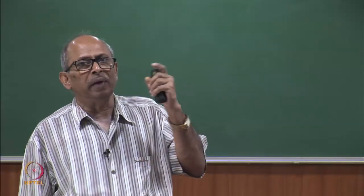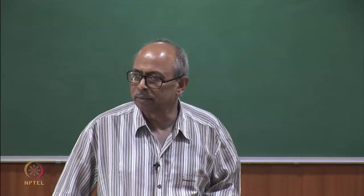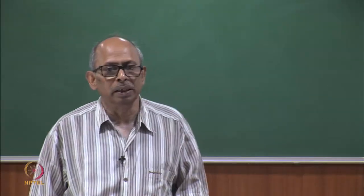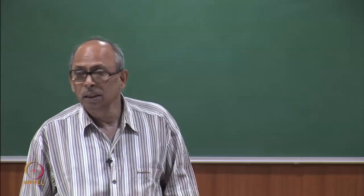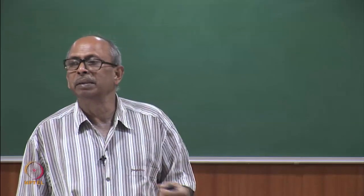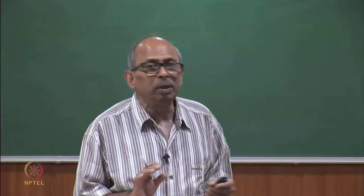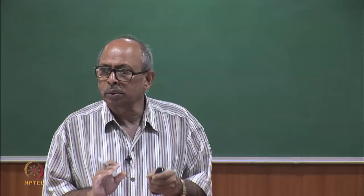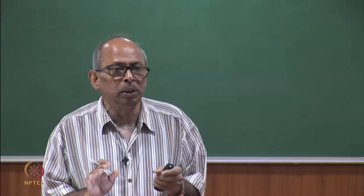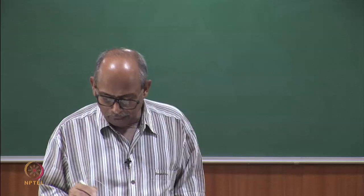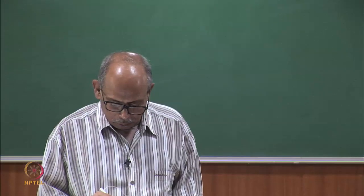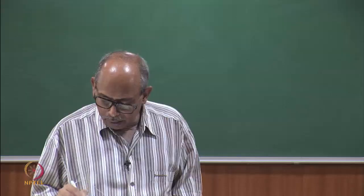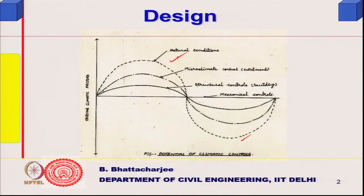For example, even though a fan is an active device, we consider it part of the passive system because it does not consume large energy. Air conditioners consume a lot of energy and are active devices. With pure passive devices, you would not be able to fully control the thermal condition of the space. Natural conditions have some mean value and a perturbation. The variation will have a lower side and higher side naturally.